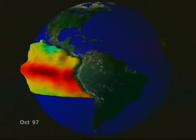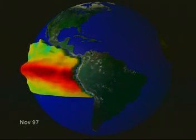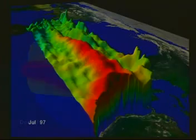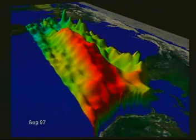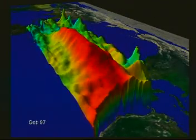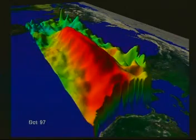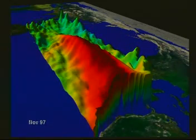Visualizing how three key data sets differ from normal conditions reveals the magnitude of the 1997-98 event and gives new insights into how the ocean and atmosphere couple to produce El Nino.